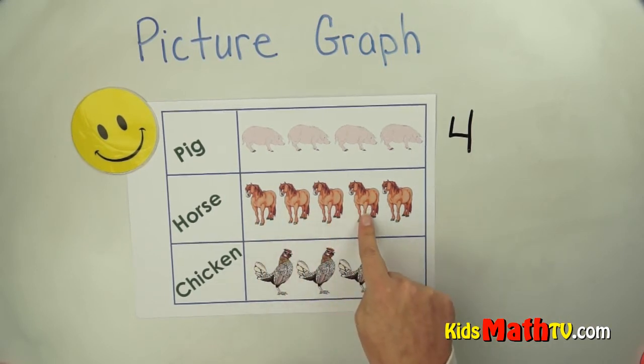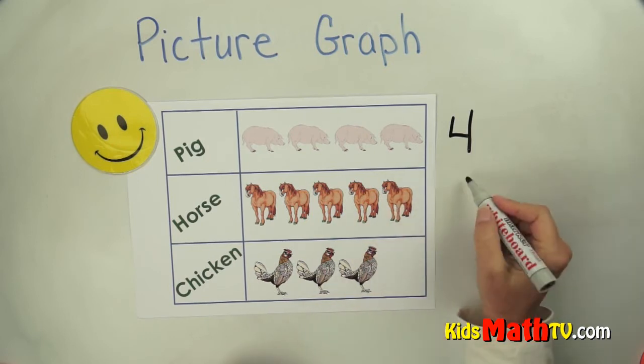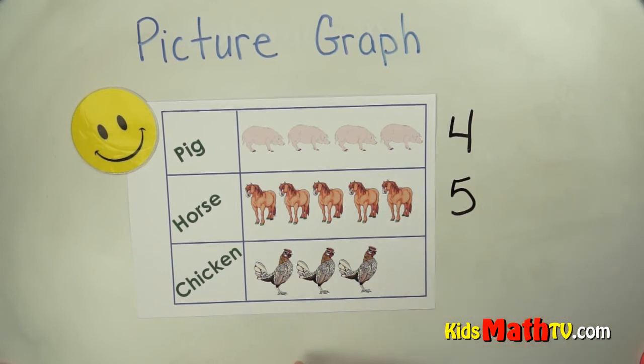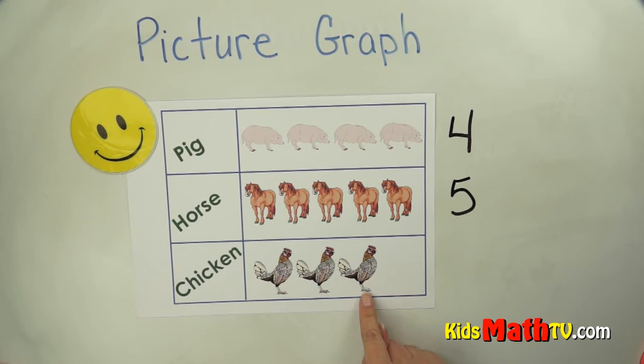How many horses? One, two, three, four, five. Five horses. So she saw more horses than she did pigs. What about chickens?